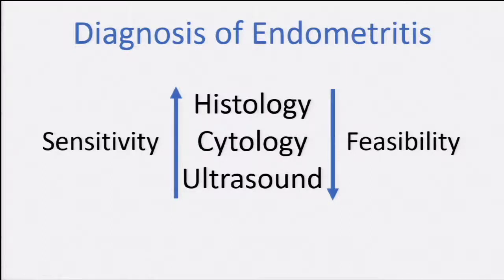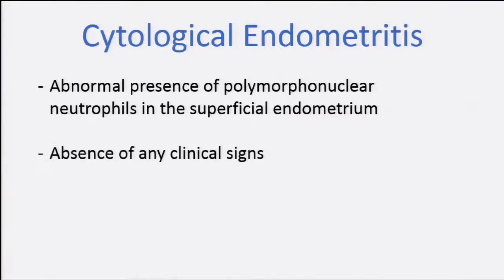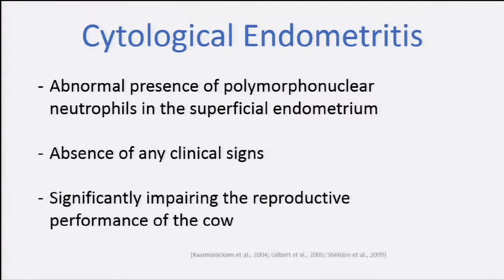Ultrasound is very simple — you need some training, but you can diagnose behind the cow and get results very fast. However, the correlation between cytology and ultrasound is not good. Cytology is not the perfect technique either, but it's probably the equilibrium between the practical point of view and the sensitivity of the test. When we diagnose subclinical endometritis by cytology, we are talking about cytological endometritis, which by definition is the presence of polymorphonuclear cells in the superficial endometrium without any clinical signs, and importantly, with a reduction in the reproductive performance of the cow.